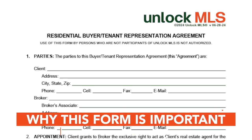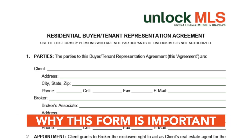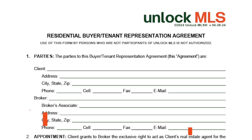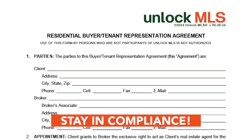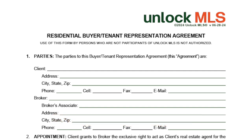Now let's discuss why this form is important. Under the rules of Unlock MLS, agents are now required to get a written agreement, such as this, signed before showing properties. You do not have to use this specific form, and you should check with your broker for guidance on which forms best fit your firm's policies. This is the longer version of the form. There is also a short form version and one that can be used for limited services, mainly focused on covering a one-time showing. This particular long form version is especially important for covering acting as an intermediary.